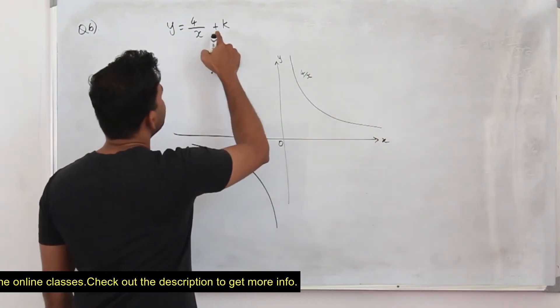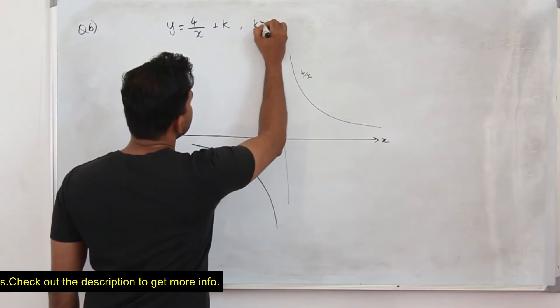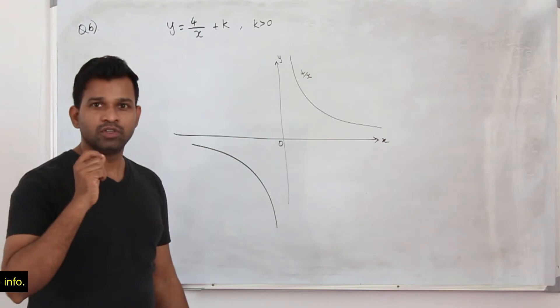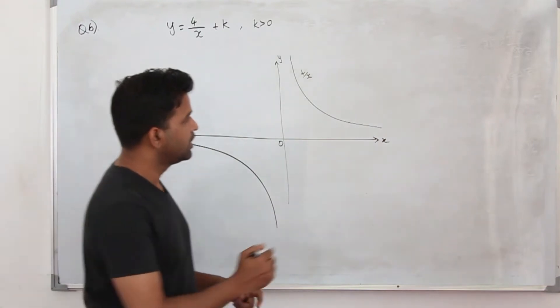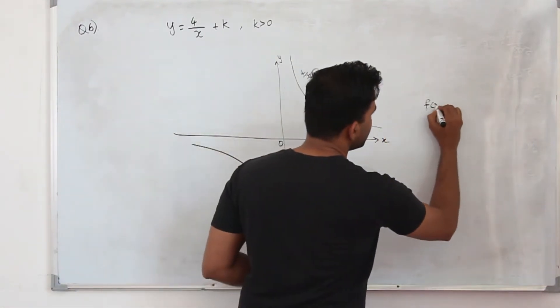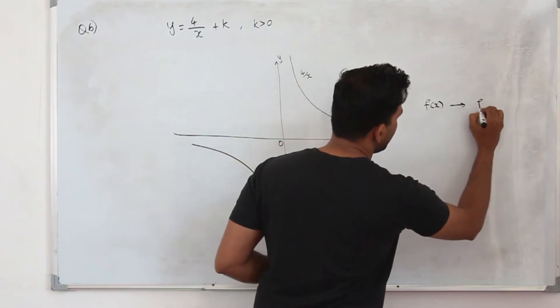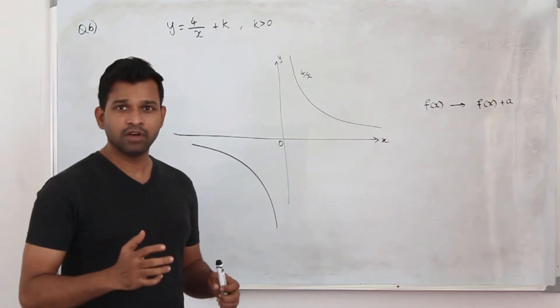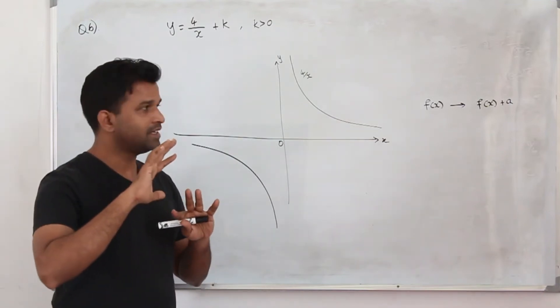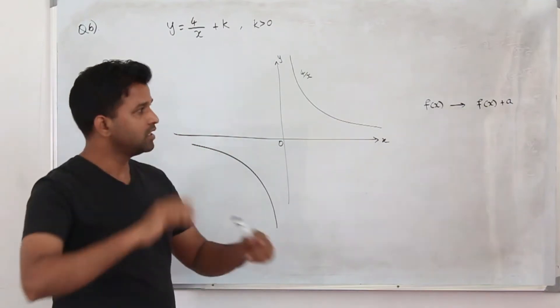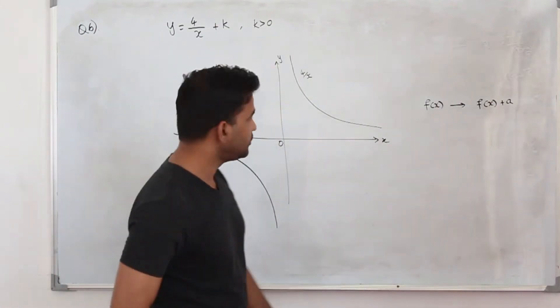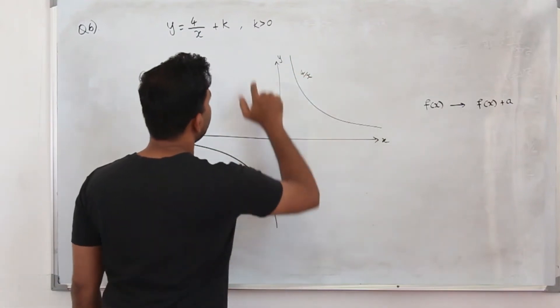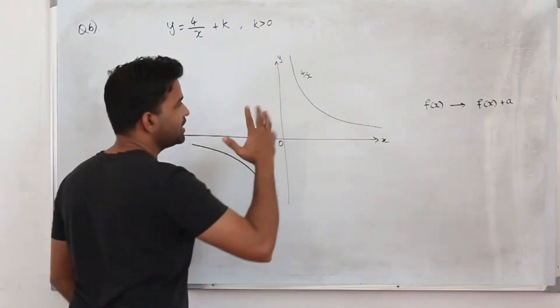Now, 4 upon x plus k. K is a positive constant. That means you are adding a number to the whole function. When you replace a function by f of x plus a, in chapter 4 we learnt when you add a number, the graph will be shifted, translated upwards. So this whole graph is going to go up, but we don't know the value. Take it as just k.